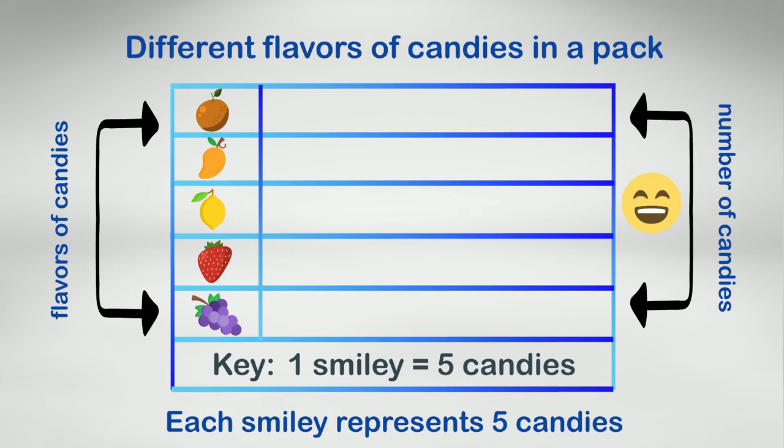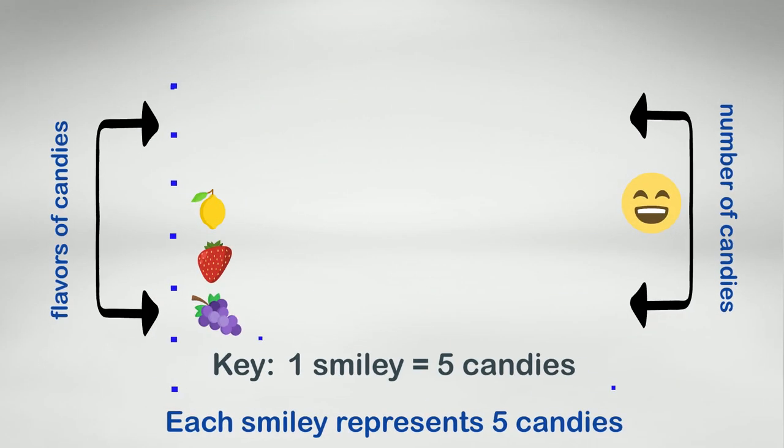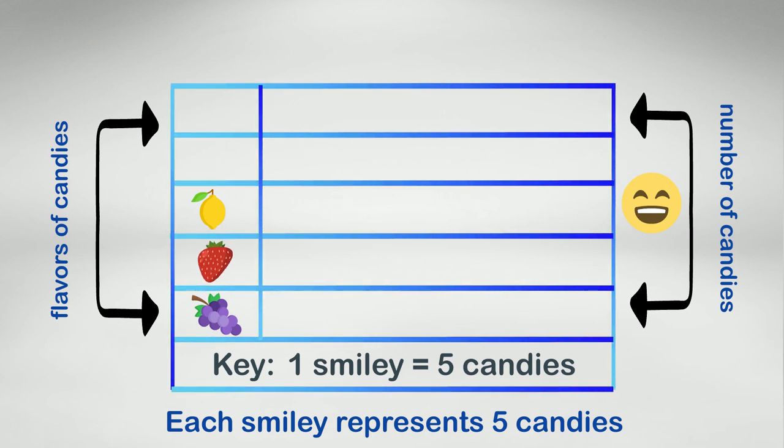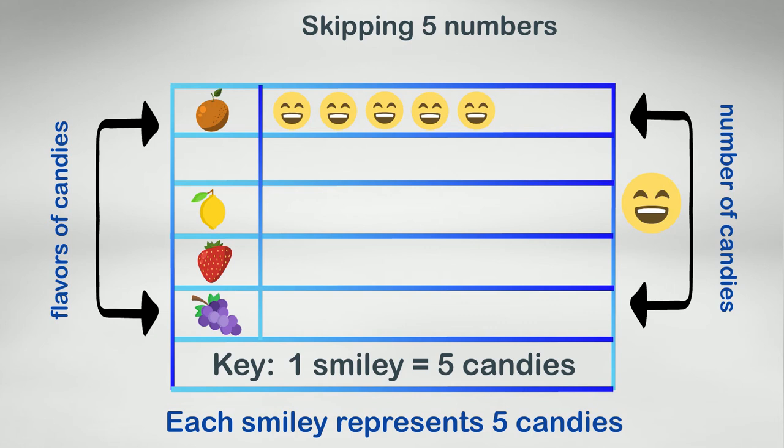Now let's count the smileys. Let's begin with orange flavored candies by skipping five numbers each time. Five, ten, fifteen, twenty, twenty-five, thirty, thirty-five. So there are 35 orange candies in the pack.